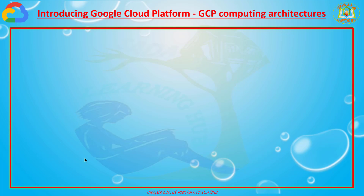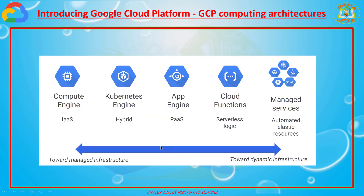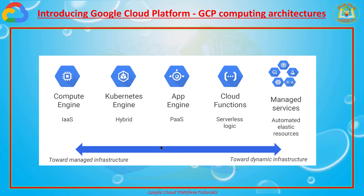See here, this is the Google Cloud Architecture. There are different components. Compute Engine comes under IaaS — infrastructure as a service. Next, Kubernetes Engine is in a hybrid model. App Engine comes under platform as a service. Cloud Functions are serverless logic. And managed services means automated elastic resources — there are many services provided by Google.